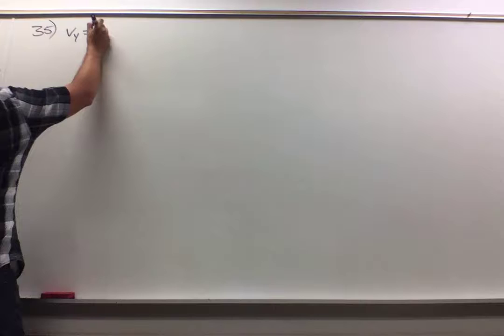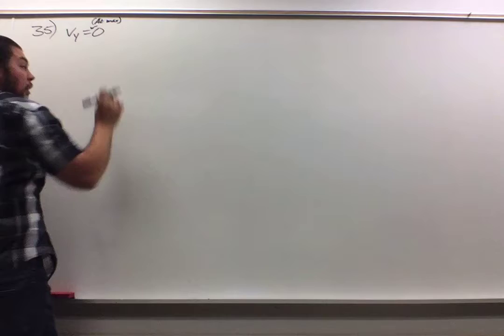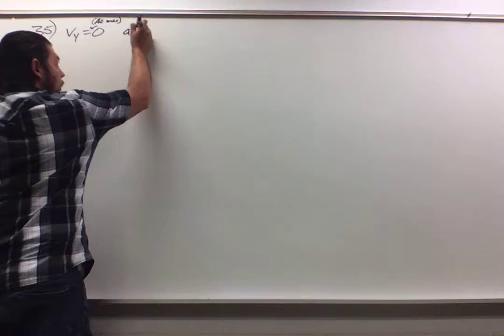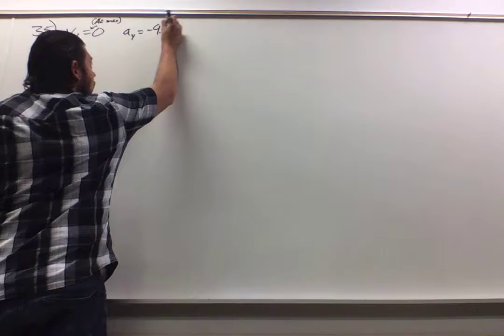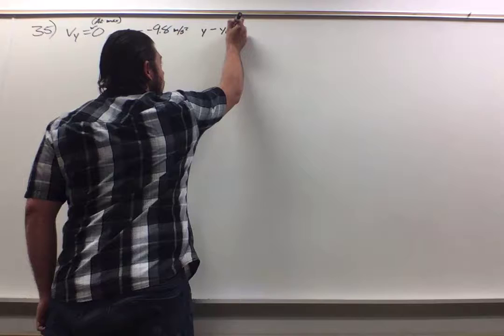V sub 0 is going to equal 0. This is at the max. At max. We know that A sub Y is equal to negative 9.8 meters per second squared. And we know that Y minus Y sub 0 is going to be 1.2 meters.